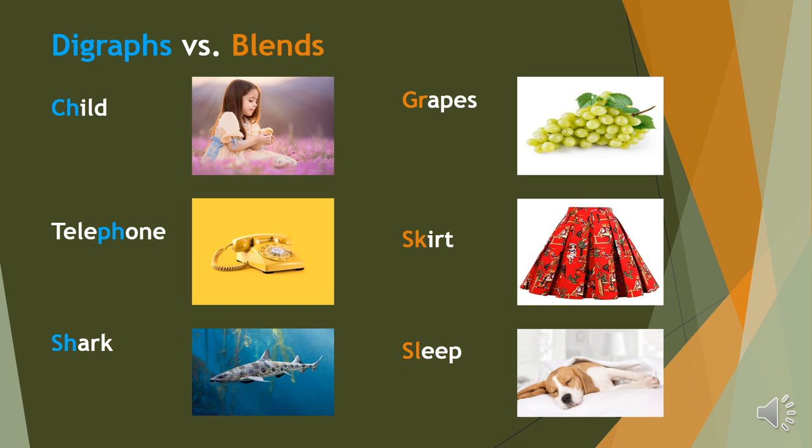But blends are two letters. They are coming together but they are not producing a different sound. They will be just like the original. For example, grapes, skirt, sleep. And also they are pronounced and they are spelled the way they have been written. So there will be no difference. They will not produce a different sound. They will stay like the original.